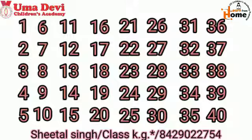Now dear students, we will revise once more, 1 to 40. 1, 2, 3, 4, 5, 6, 7, 8, 9, 10, 11, 12, 13, 14, 15, 16, 17, 18, 19, 20, 21, 22, 23, 24, 25, 26, 27, 28, 29, 30, 31, 32, 33, 34, 35, 36, 37, 38, 39, 40. Good! I hope you all have revised all these numbers from 1 to 40.